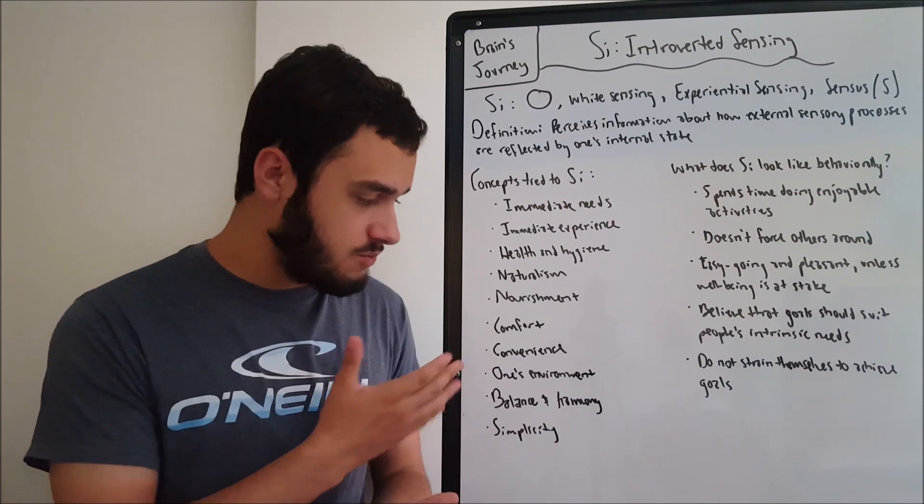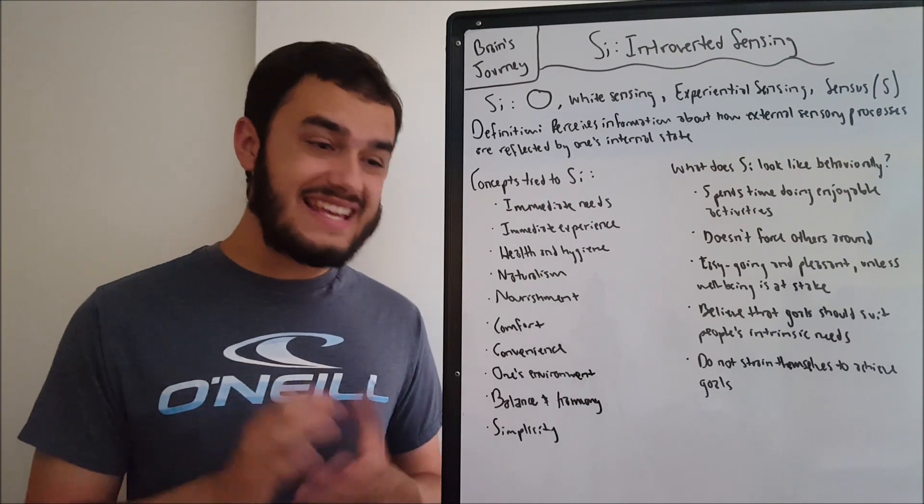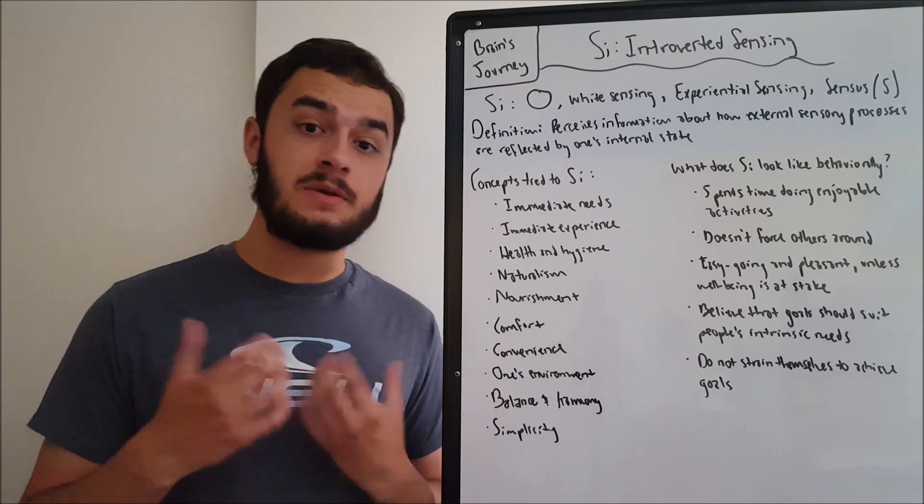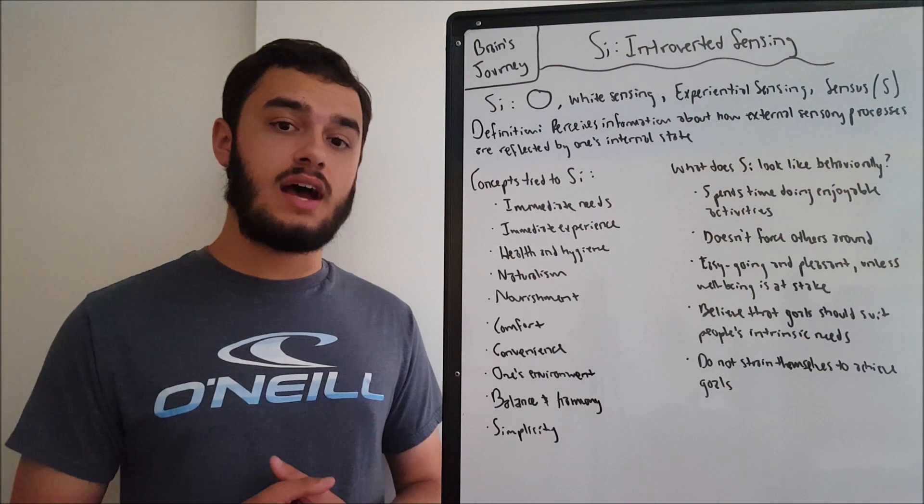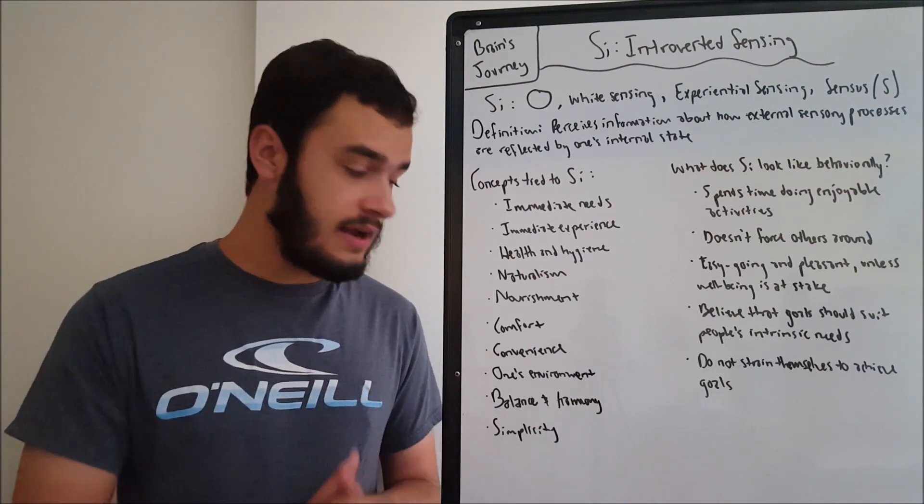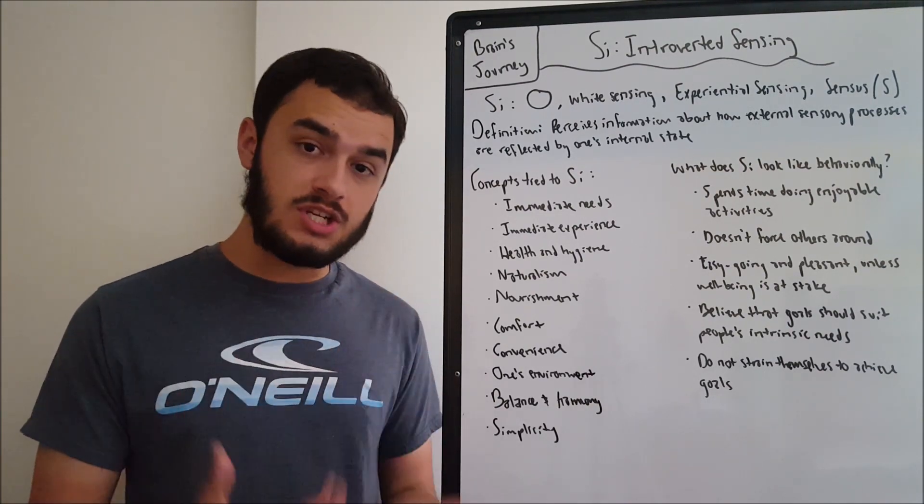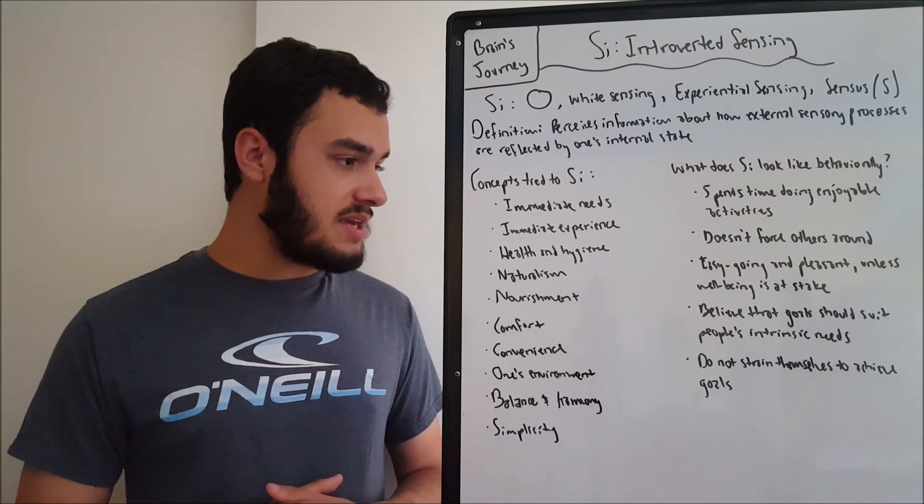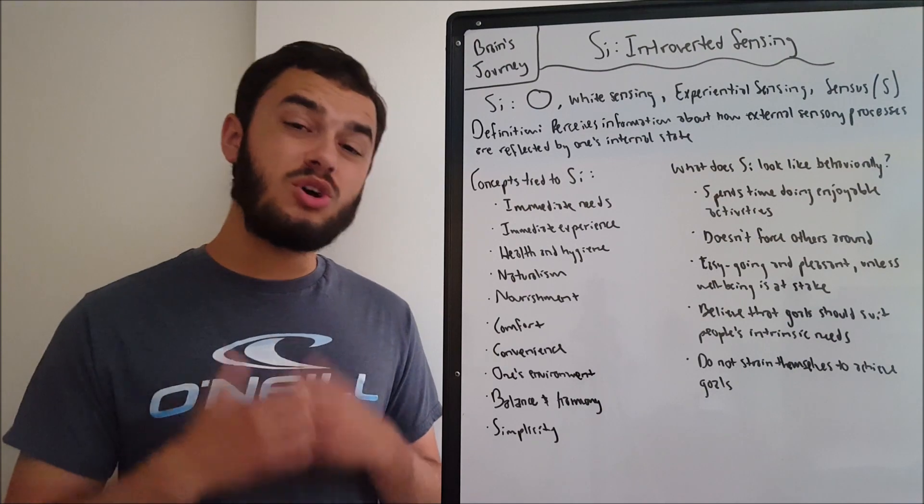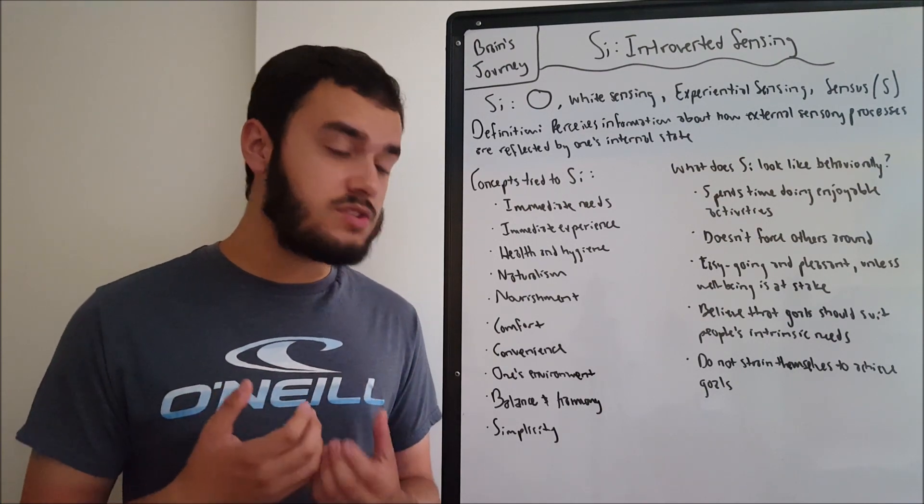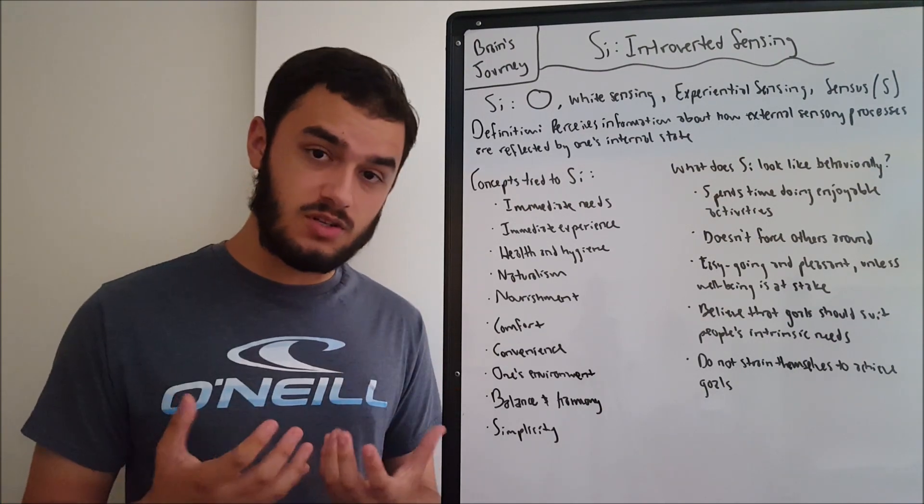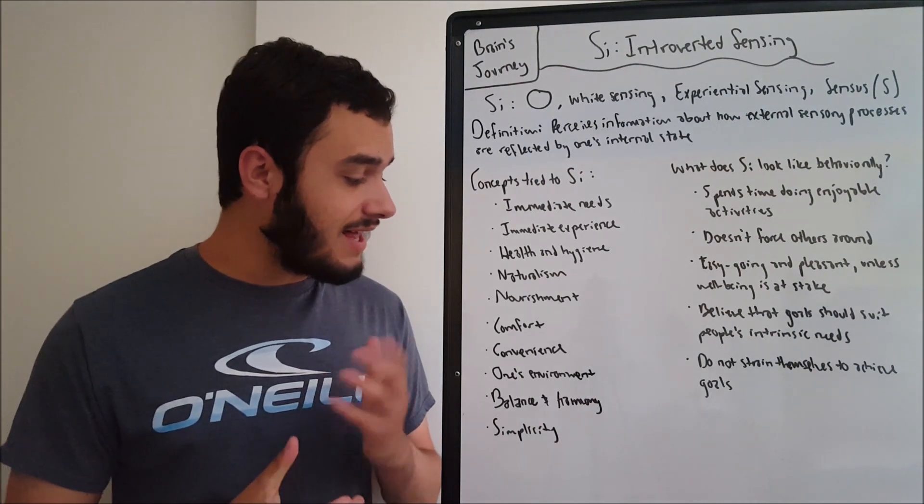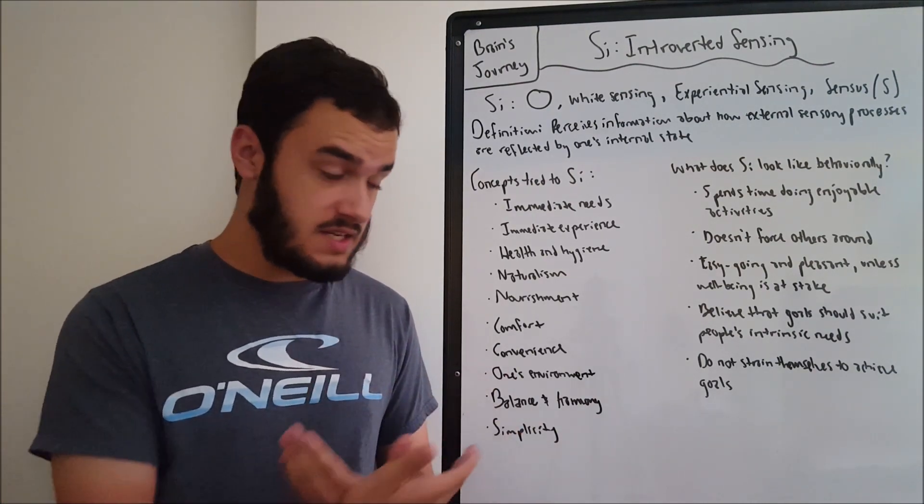Another thing is convenience, whether something is convenient or not. Laziness is one thing. If something's inconvenient, SI is not conducive to that. It prizes things that are easy to achieve, they're easygoing, a lot of things that maybe they don't push themselves too much to achieve goals if they'd be inconvenient for the personal experience. It's a lot of things that are related to just straight convenience.